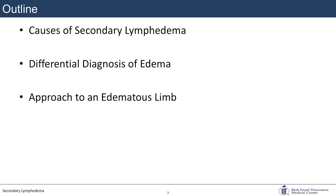We're going to talk about causes of secondary lymphedema, differential diagnosis of edema, and the approach to an edematous limb. This is a big topic, so we're going to try to speed through it. Secondary lymphedema, quite simply, is the injury to lymphatic vasculature with resultant lymphatic dysfunction. It's quite common, much more frequently seen than some of the other conditions we just heard about.